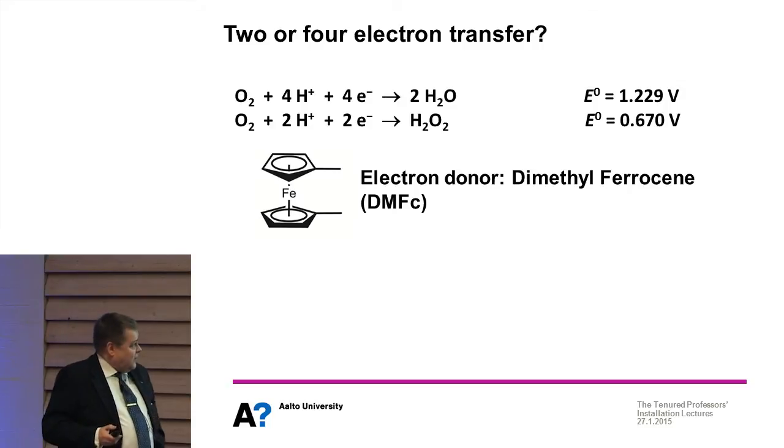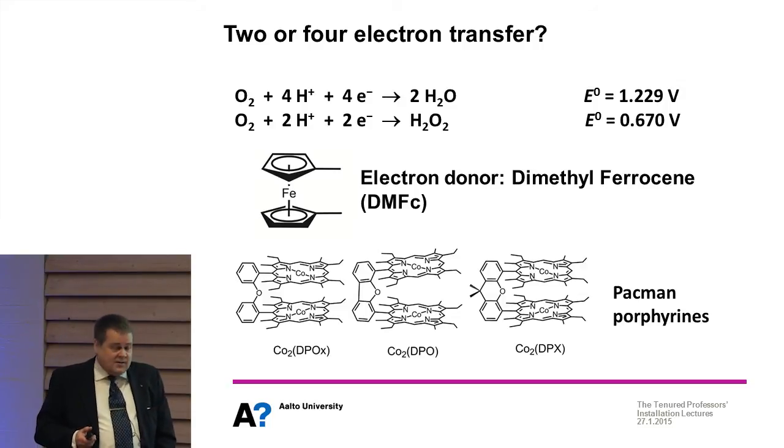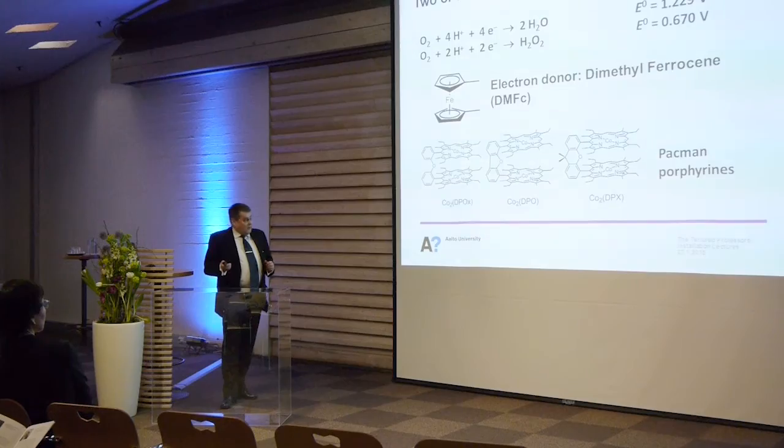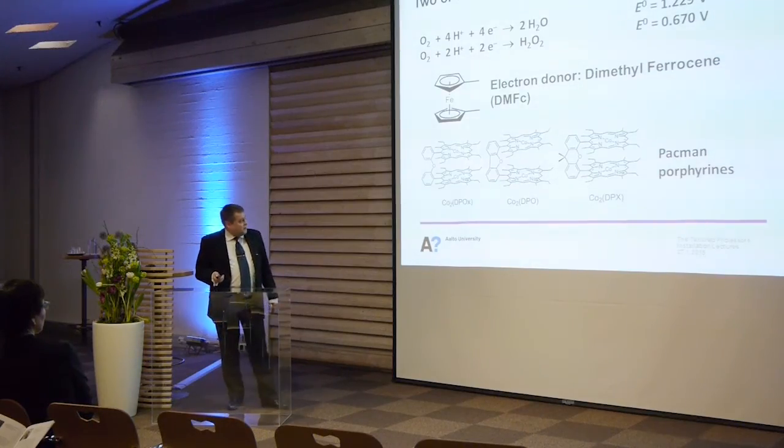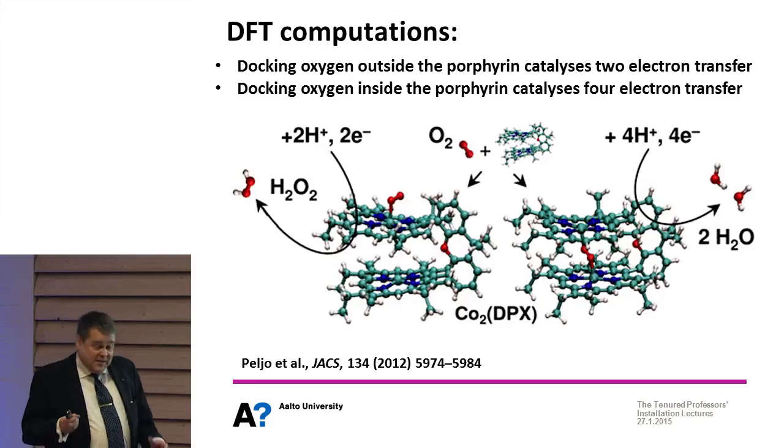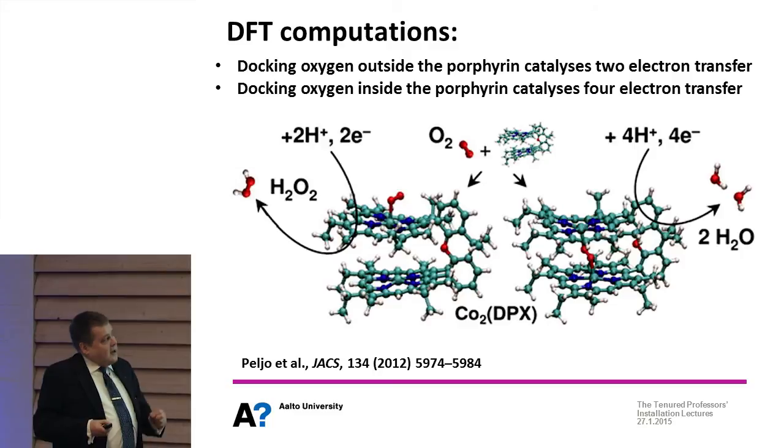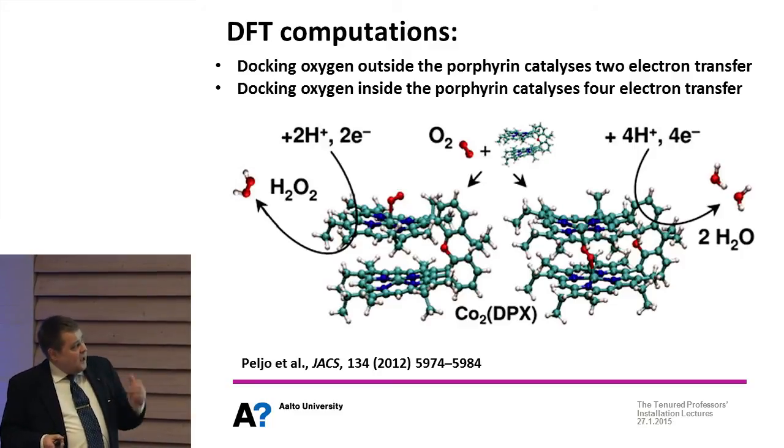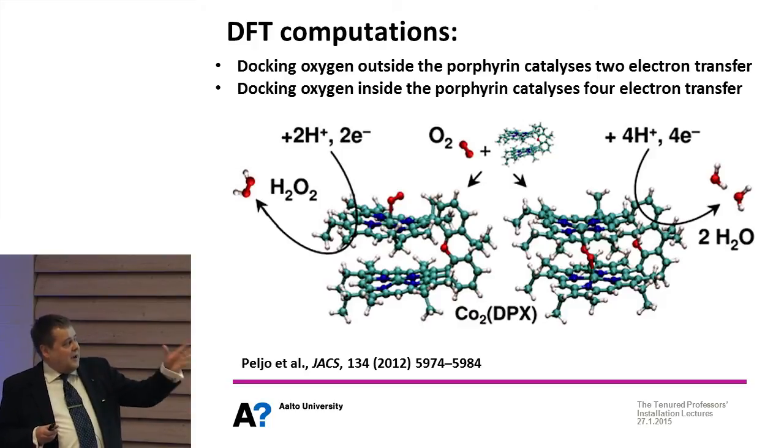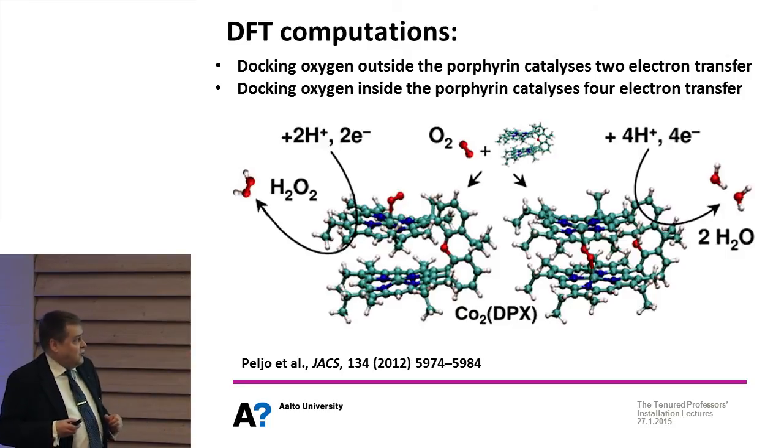Next experiments we did with so-called pacman porphyrins which were synthesized in France by our European partners. Here we have a double metallic core so we have hope of having this four-electron transfer reaction. We did all the same experiments - I don't repeat them anymore. But we still were forming some hydrogen peroxide. DFT calculations done in our lab show that if the oxygen is docking in between the porphyrin plates then we have four-electron transfer and water formation, but if oxygen is docked on surface on either of the porphyrin planes then we have the hydrogen peroxide.